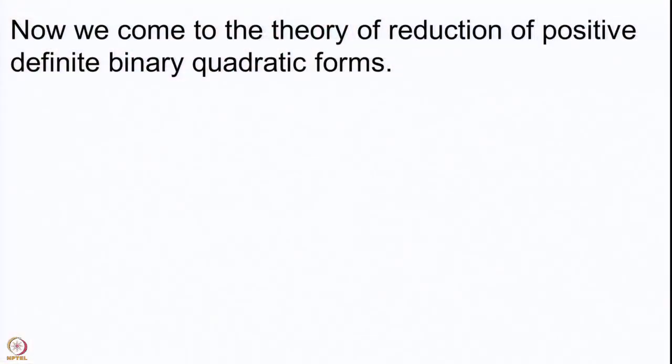Now we are going to look at the theory of transforming a form to a simpler form. We will give this concept clearly, but we are going to introduce two very important transformations. This is the theory called reduction of integral binary forms, but we restrict ourselves to only positive definite forms. Our motivation was to study forms like x² + y², and to determine all natural numbers which are sums of two squares, three squares, or four squares.